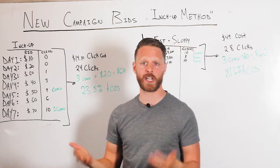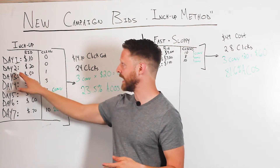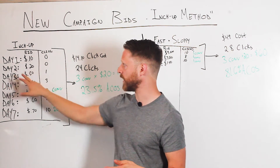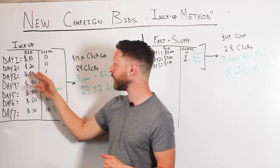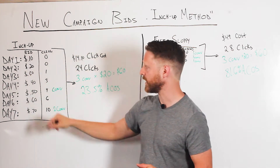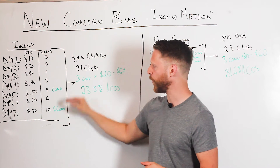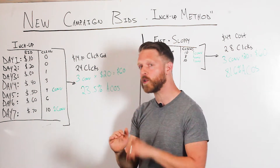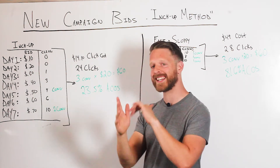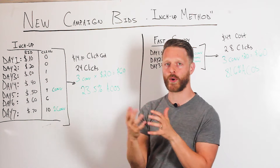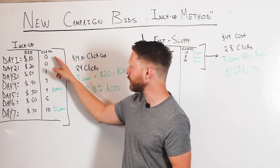Day one: ten cents, no clicks. Day two: twenty cents, no clicks. Day three: thirty cents, one click. Day four: forty cents, three clicks — so on and so forth. I'm slowly but surely inching up my bid about ten cents every single day.